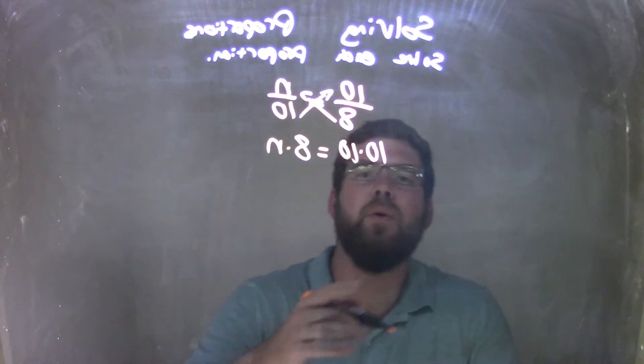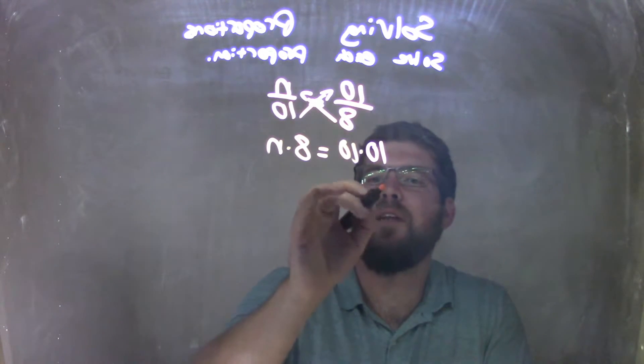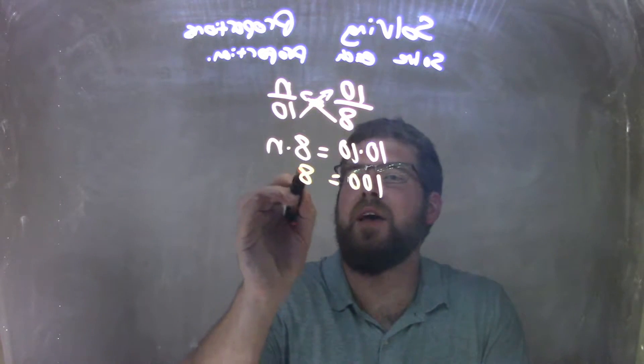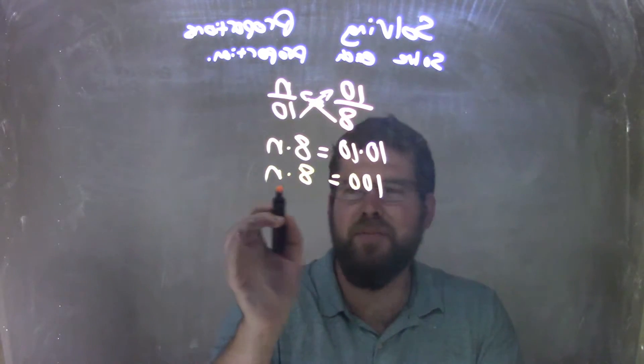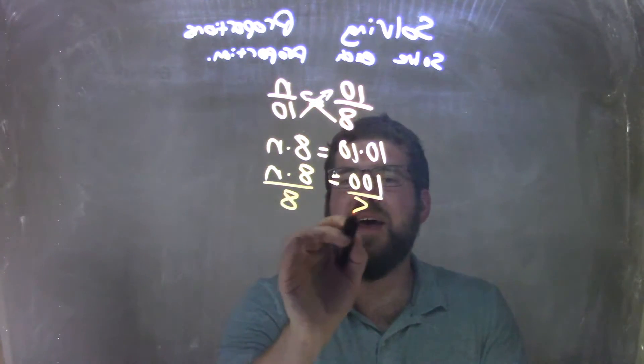Simplify that. 10 times 10 is 100, equals 8 times n. Now I need to divide by 8, so I divide by 8 to both sides.